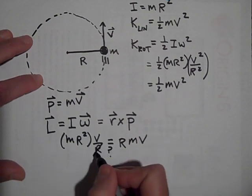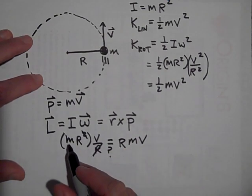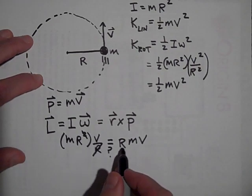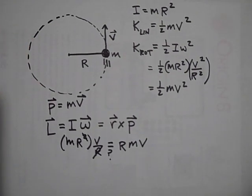Yeah, sure enough, these r's cancel and mrv is equal to rmv. Okay. So that's angular momentum.